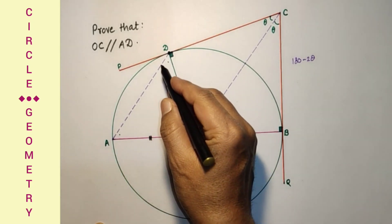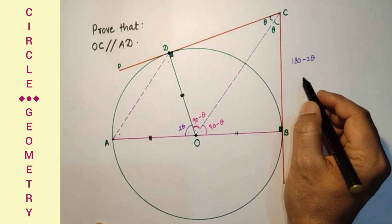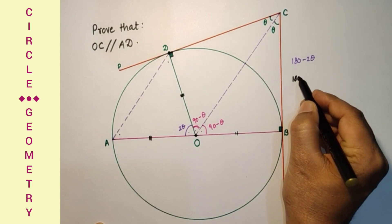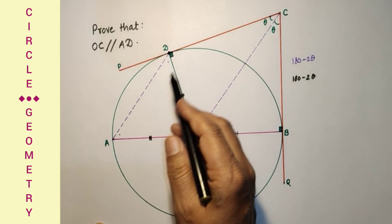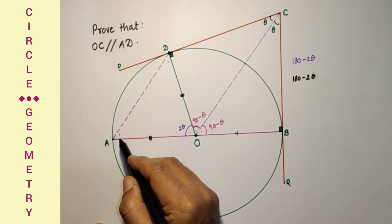Sum of this angle and this angle will be 180 minus 2 theta. Sum of these two is 180 minus 2 theta, and since these two angles are equal.